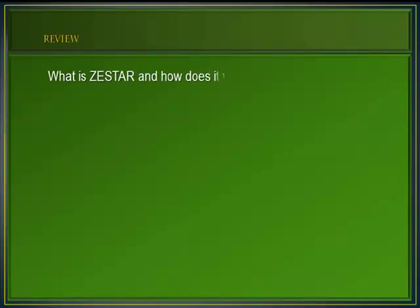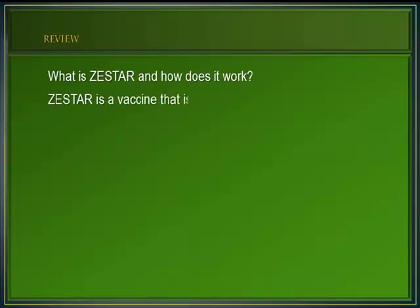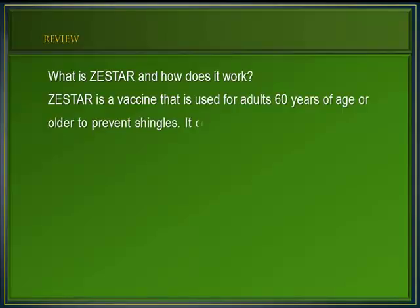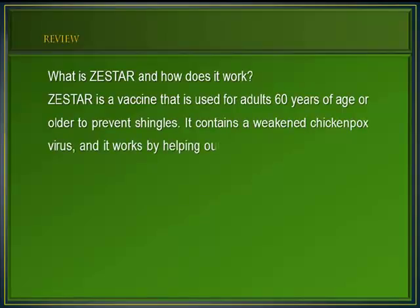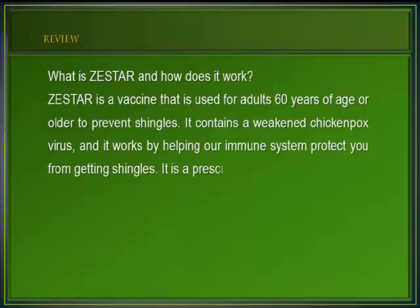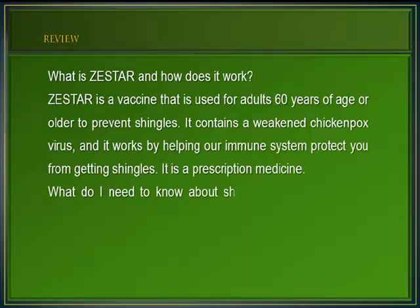What is Zestar and how does it work? Zestar is a vaccine that is used for adults 60 years of age or older to prevent shingles. It contains a weakened chickenpox virus, and it works by helping our immune system protect you from getting shingles. It is a prescription medicine.